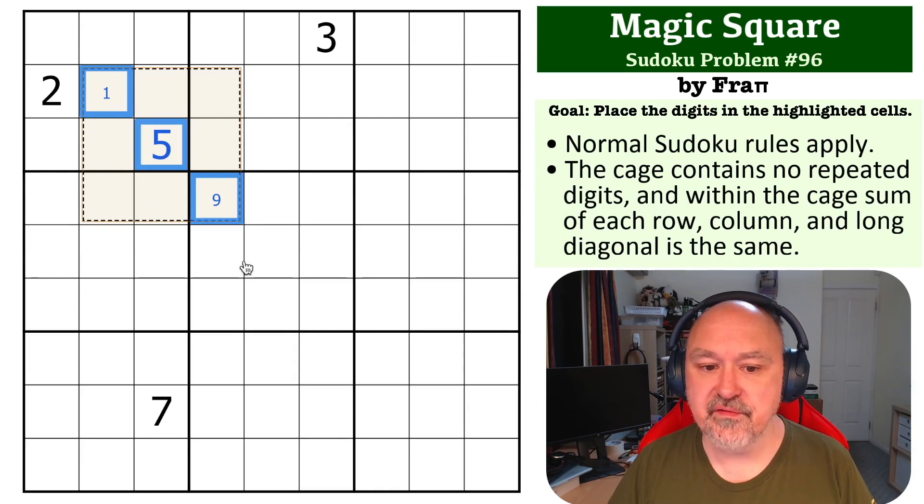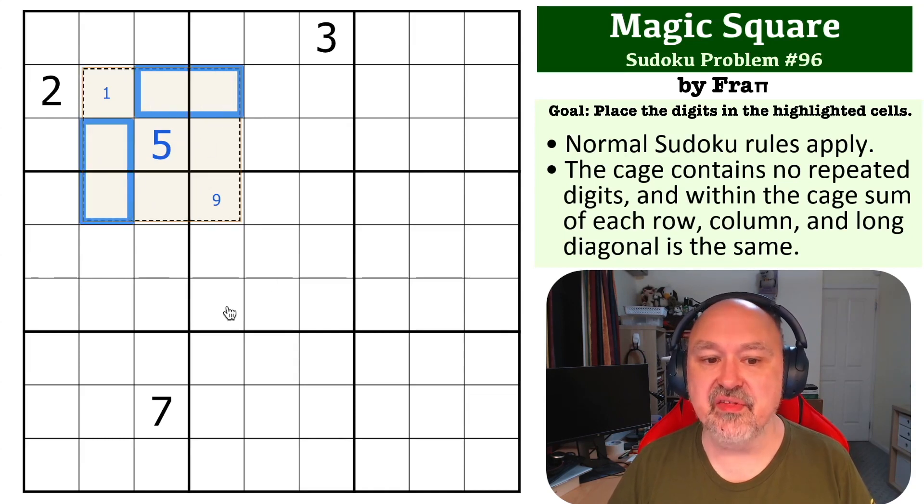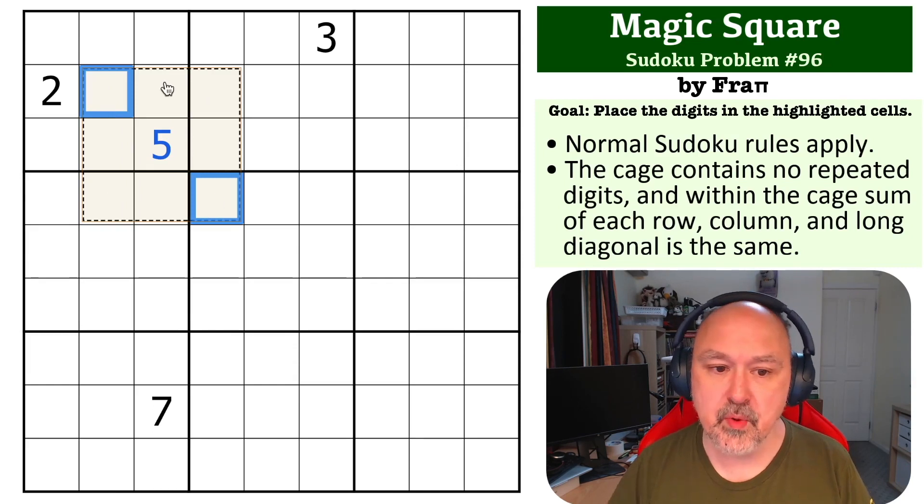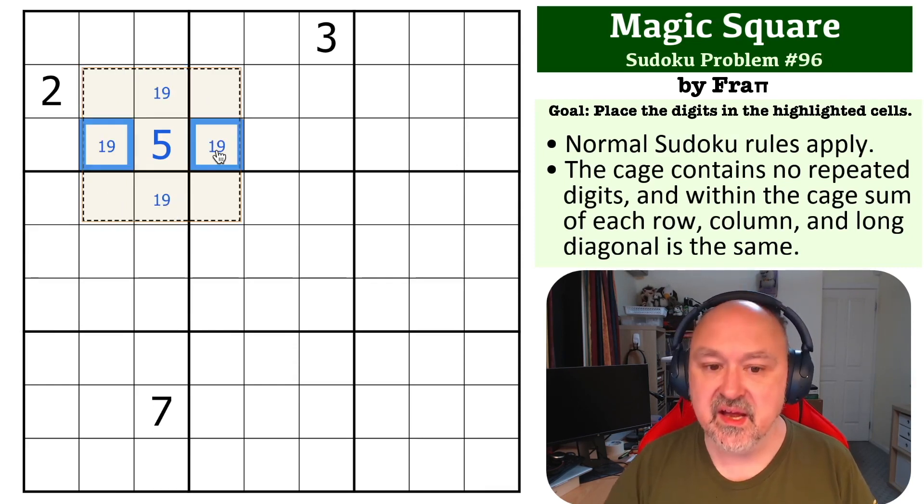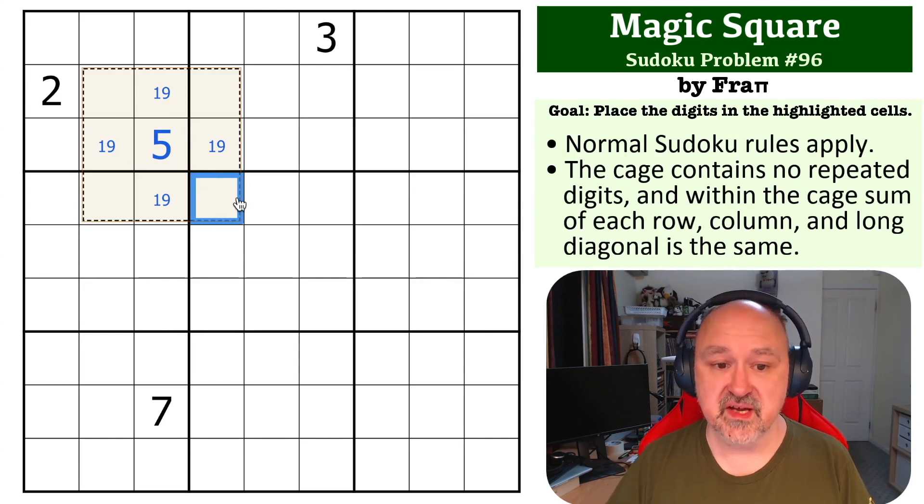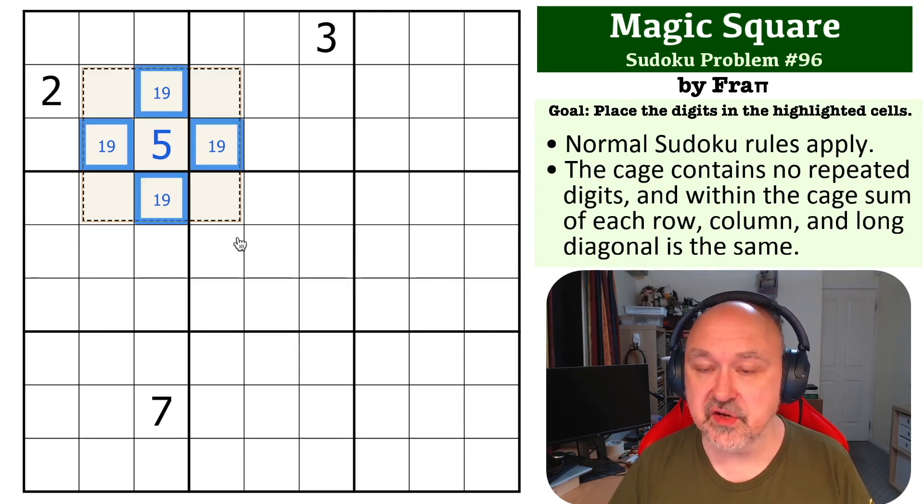So if I go one, five, nine down here, I can never get the 14s I need because I need two of them. It just doesn't work. So you can never put one in a corner. So we know that one, nine is going to have to be in one of these. And it's the same if I do it the other way around. If I put one here, this is nine, and I can't complete the other 14s.